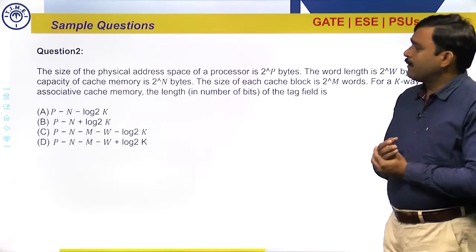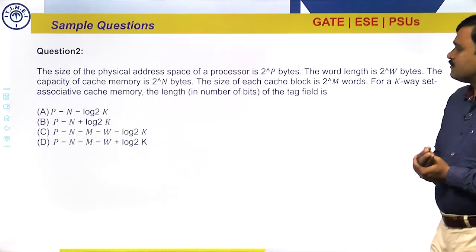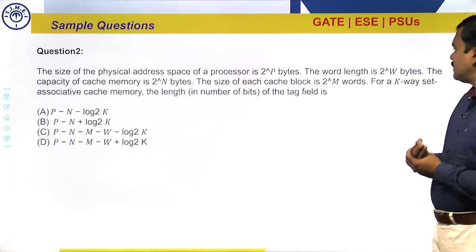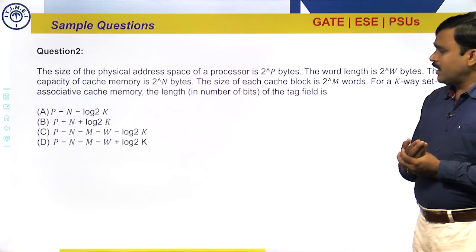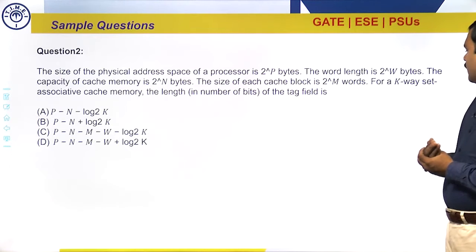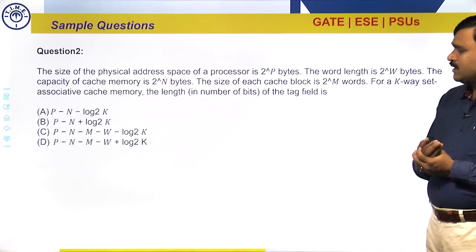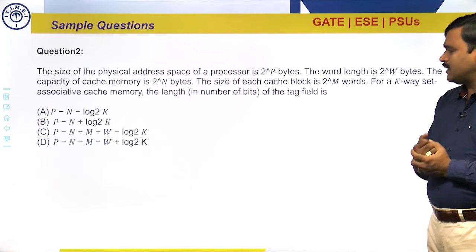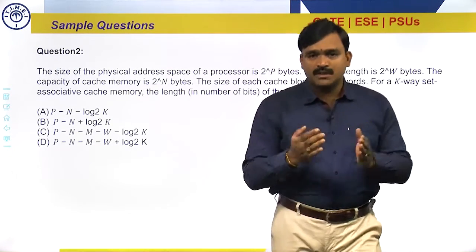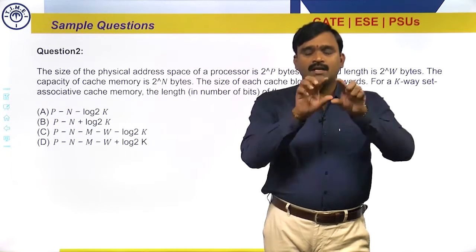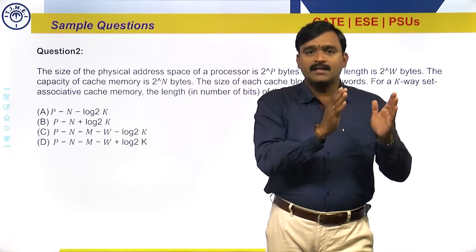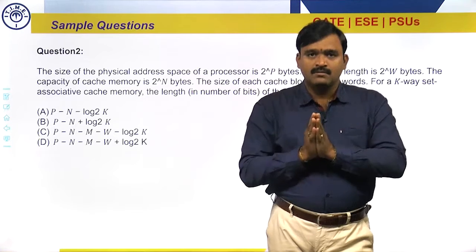The problem: the size of the physical address space of a processor is 2^p bytes, the word length is 2^w bytes, the capacity of the cache memory is 2^n bytes, the size of each cache block is 2^m words. For a k-way set-associative cache memory, the length in number of bits of the tag field is to be determined.